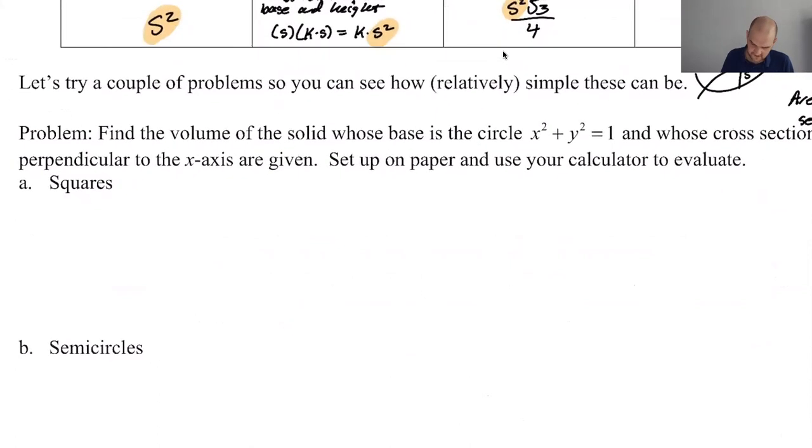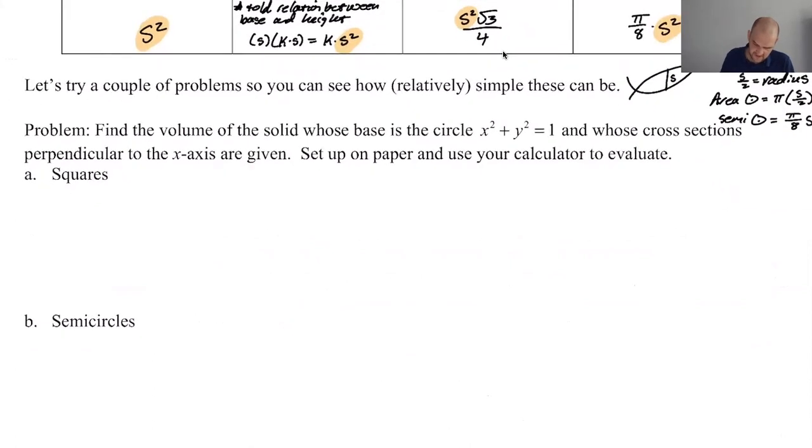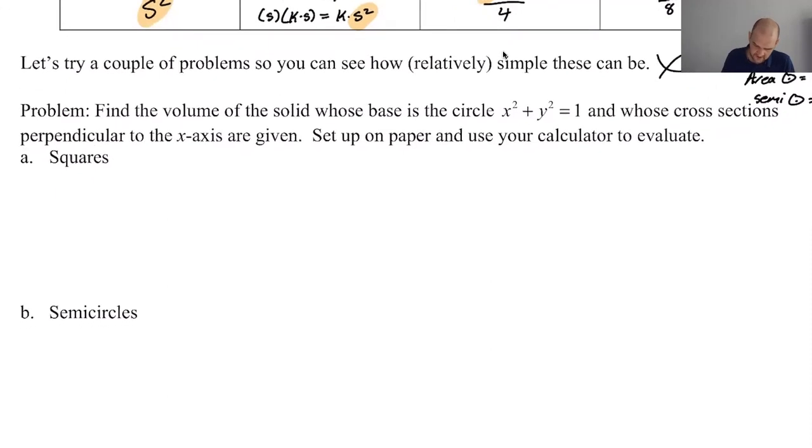So let's see if we can do it. So volume of solid whose base is the circle x squared plus y squared equals one unit circle and whose cross-section is perpendicular to the x-axis are given. All right. So let's draw something. So, I mean, it's a circle. Magic circle. All right.